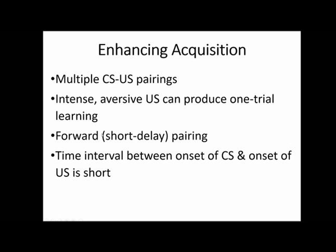Putting it all together: when is acquisition the best? It's going to be best when you have multiple CS-US pairings. Instead of just ringing the bell and giving the dog food once, you do it 20 times, a hundred times. More pairings usually mean stronger learning. That said, there are special cases where a single intense and aversive unconditioned stimulus can produce what's called one trial learning — the unconditioned stimulus produces such a terrible unconditioned response that you immediately learn the association.